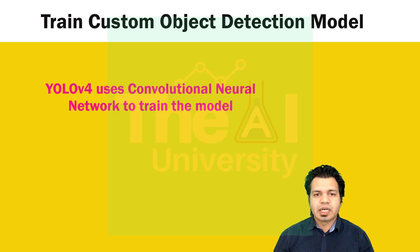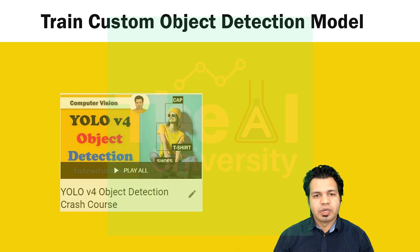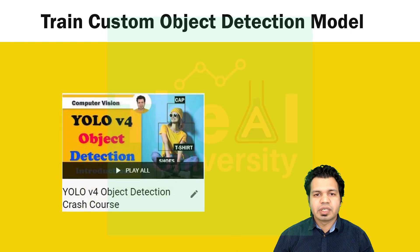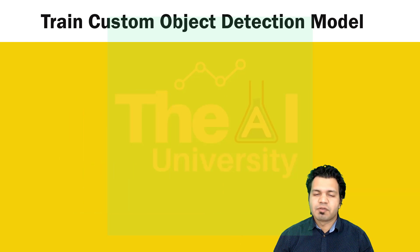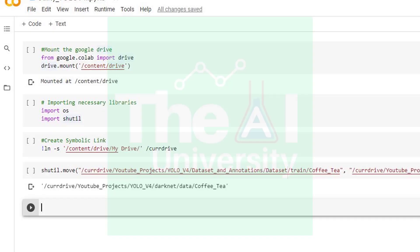If you are jumping directly to this video then consider going through the previous videos in order to understand what YOLO v4 is, how we can download custom and annotated datasets free of cost, and how we can annotate images by ourselves if we have our own image dataset. Without further delay, let's move to the Google Colab Jupyter Notebook.